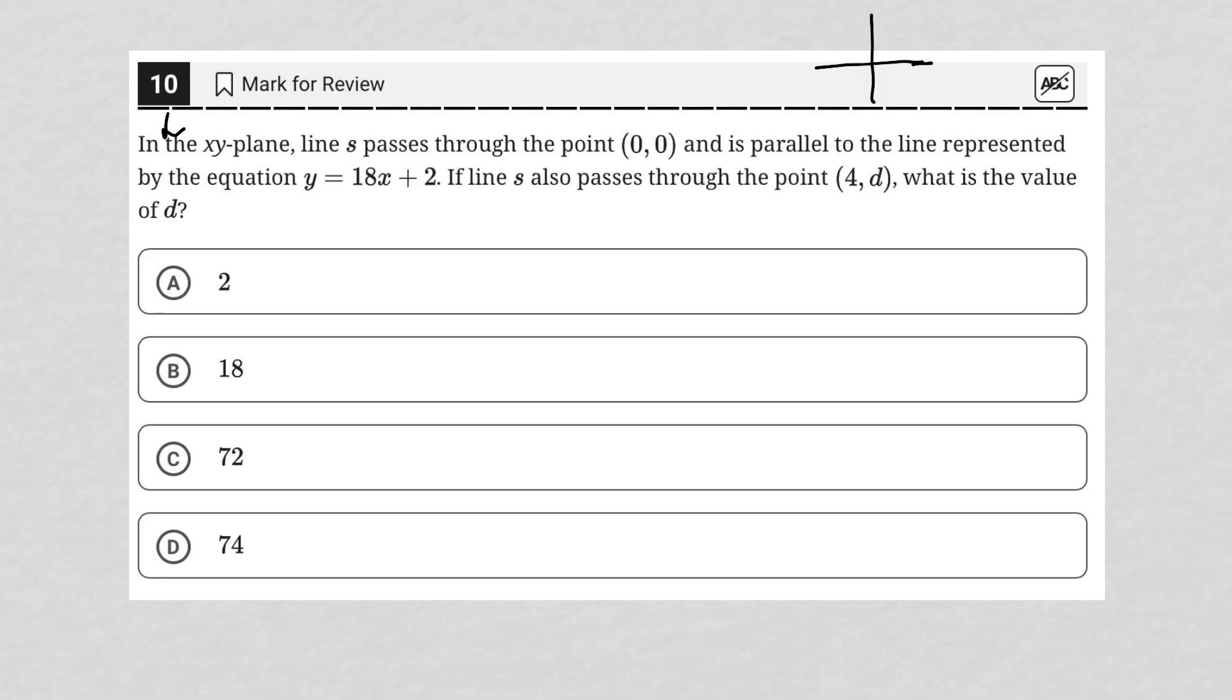I have this line s that goes through (0, 0), so I'm going to put a point here at the origin. We're told that it's parallel to the equation y = 18x + 2.